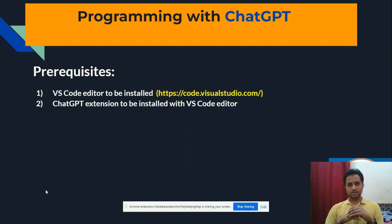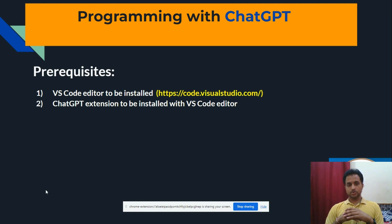Let's go to the prerequisites slide. You must have the VS Code Editor installed in your system. I already have added a URL — you can go and easily install it for whatever Windows version you have. Once you have installed the VS Code Editor, then you will have to add the ChatGPT extension with that editor as a prerequisite.